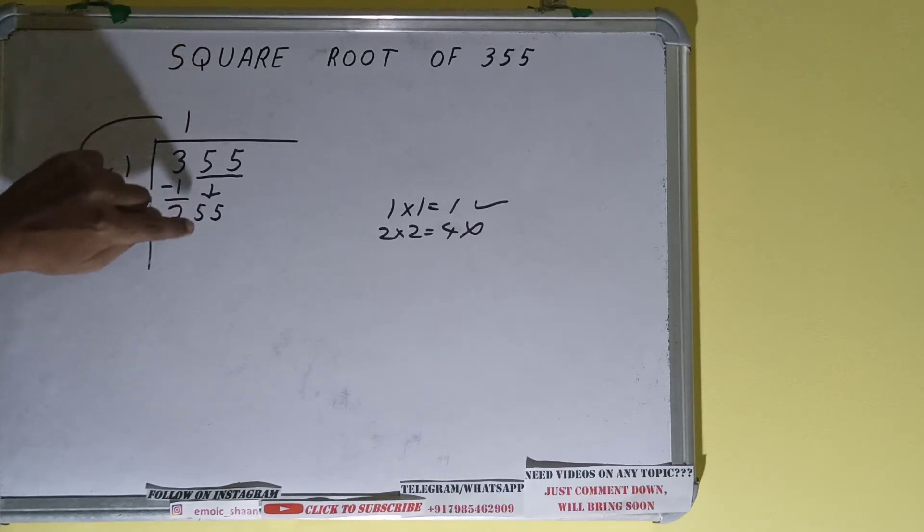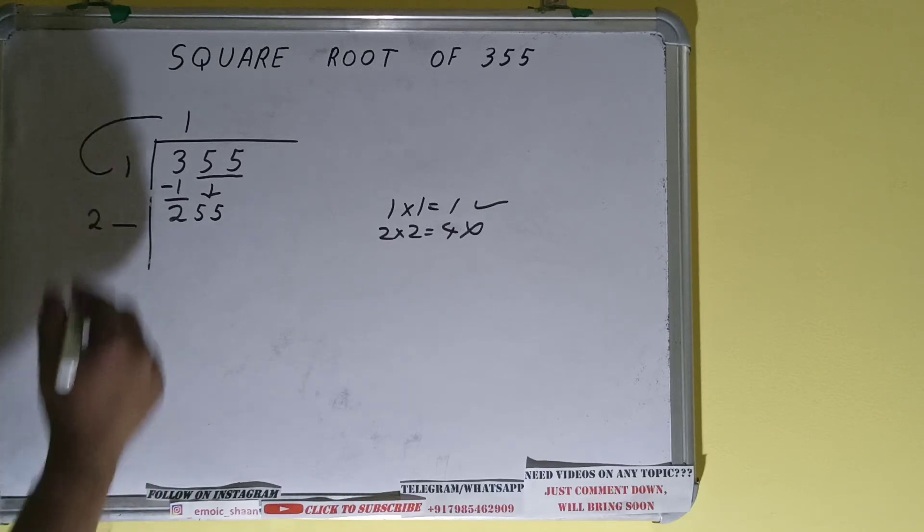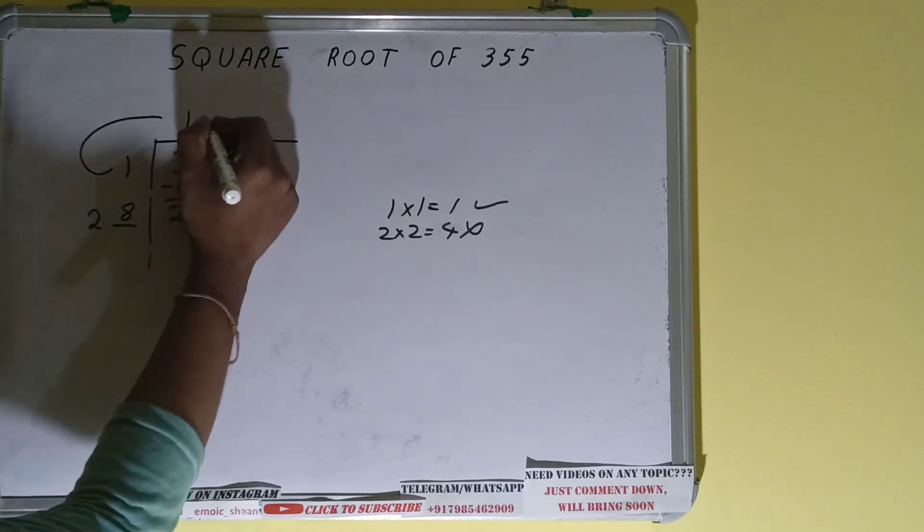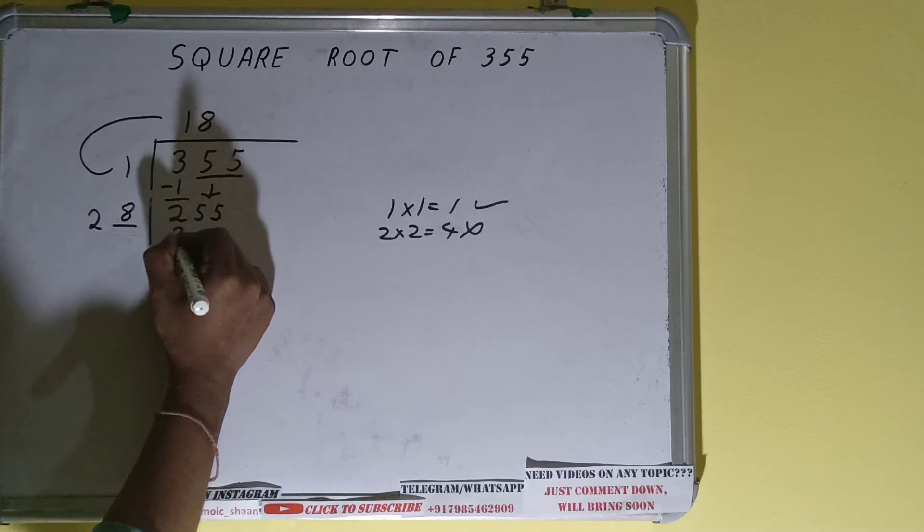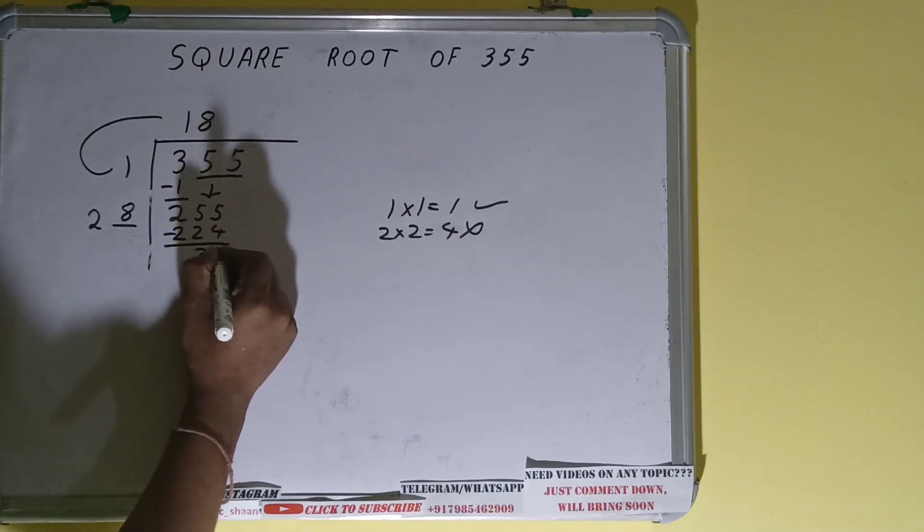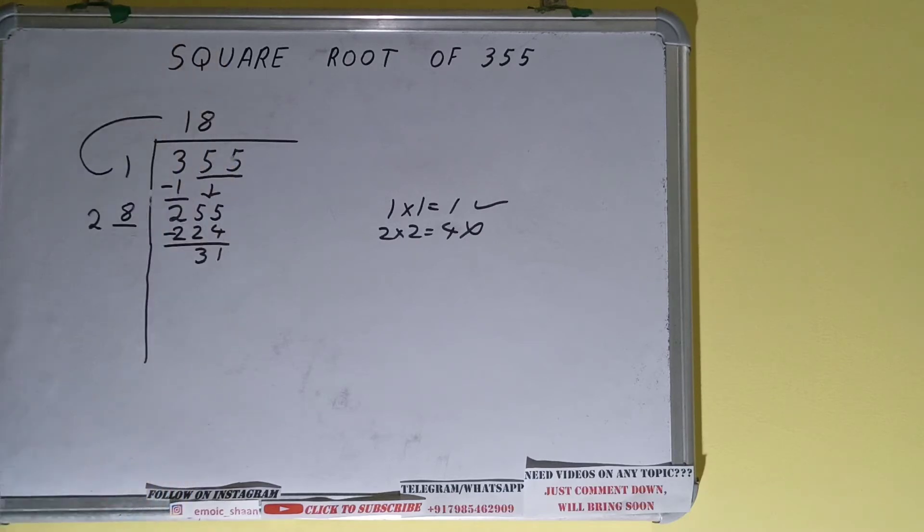Now whatever number we write here we have to write here also. So if we write 9 here and 9 here we'll get 261 which is greater than 255, so we cannot use that. We have to use 8. So 8 here and 8 here will give 224, subtract it and we'll be left with 31.